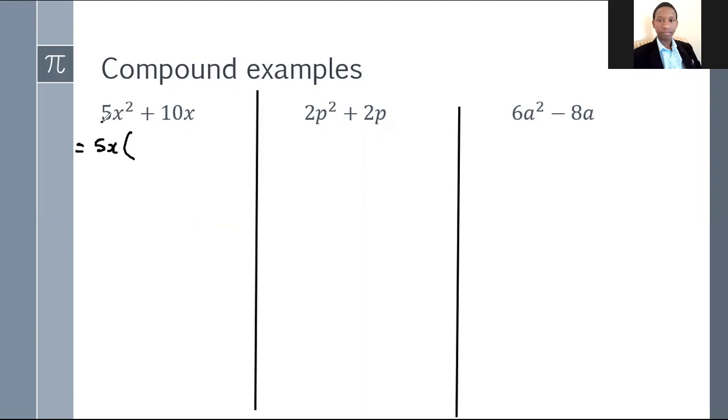Now 5x squared, this thing here, divided by 5x, that is your highest common factor, gives you an x. So this is basically what you do. And this is something that you guys should really be used to now. You can see you are left with an x there. So that's the process. That's the thought process when you take out the highest common factor.